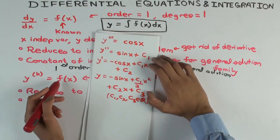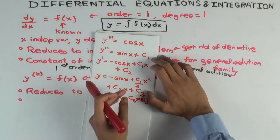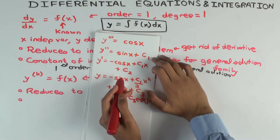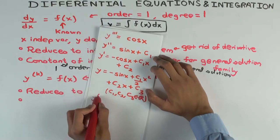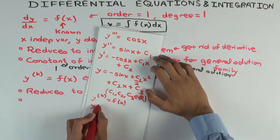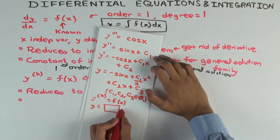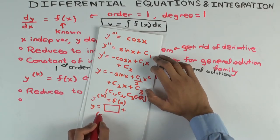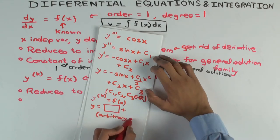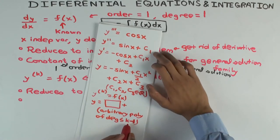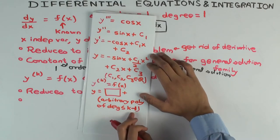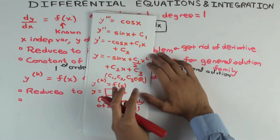In general, for an equation of type y⁽ᵏ⁾ = f(x), you'll integrate k times and accumulate on the side a polynomial of degree up to k−1 with arbitrary coefficients. So y equals a kth antiderivative of f plus an arbitrary polynomial of degree ≤ k−1, and the coefficients of that polynomial are the free parameters.